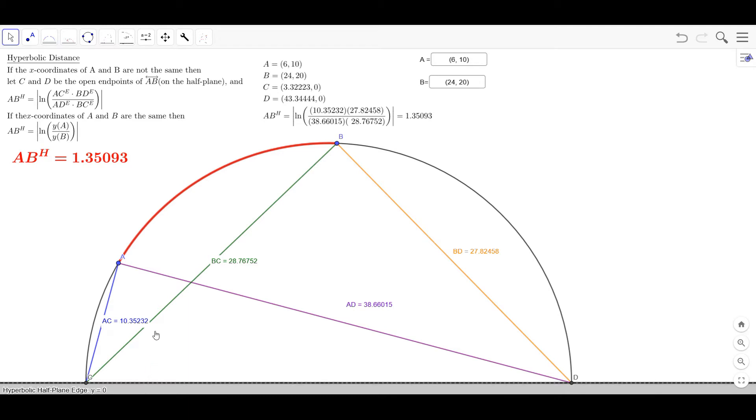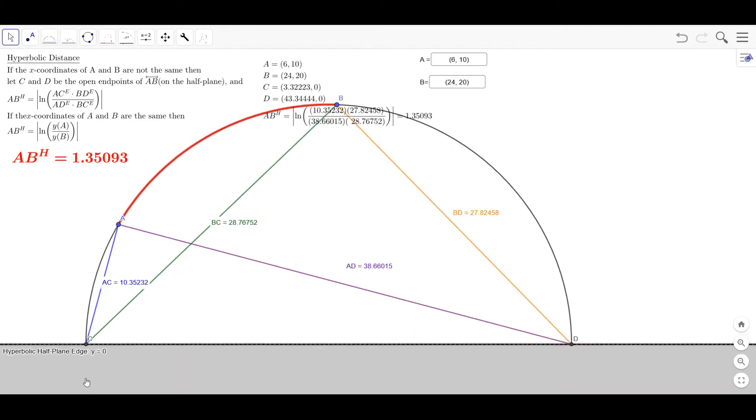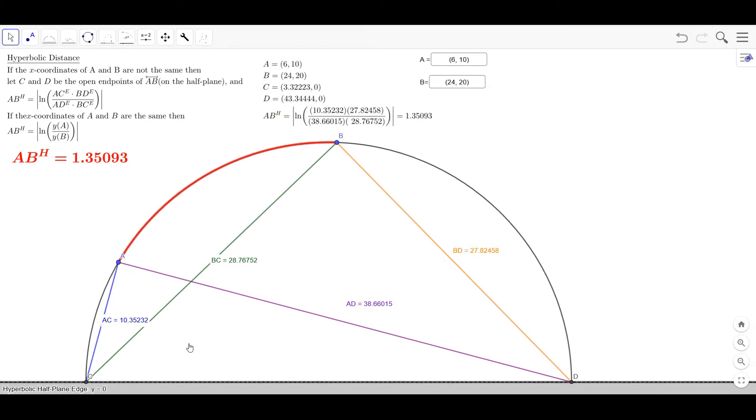Remember there are no points down here with negative coordinates, only points with positive coordinates. So points C and D technically do not exist in this geometry but they do exist as Euclidean objects.